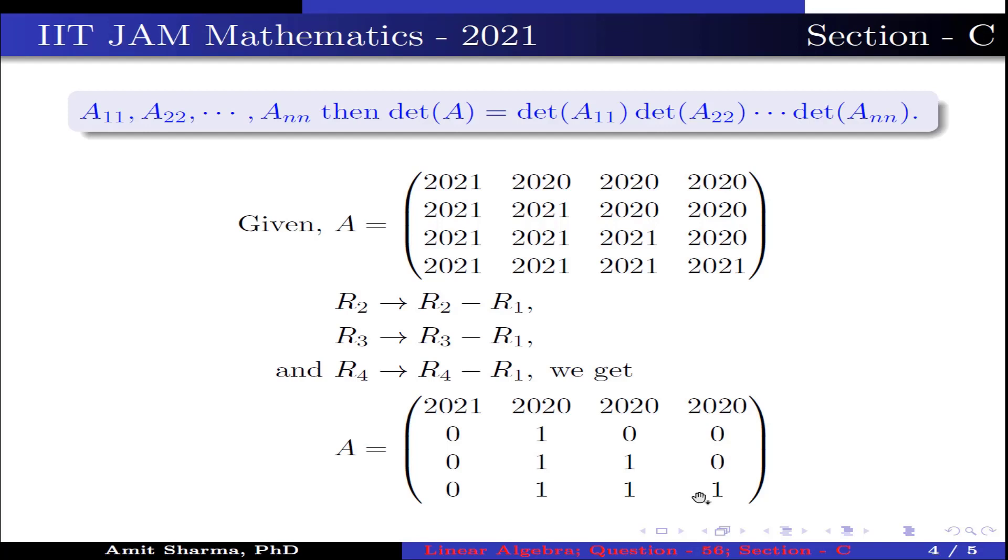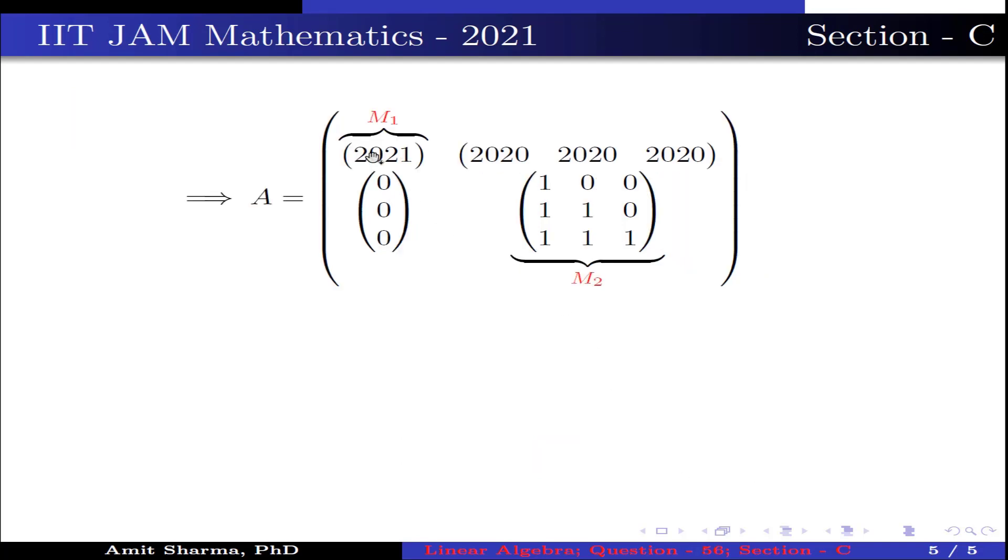Now write the matrix into the diagonal block form, where the diagonal blocks are M1, which is a 1 by 1 matrix, and M2, which is a 3 by 3 matrix, which is an upper triangular block matrix.